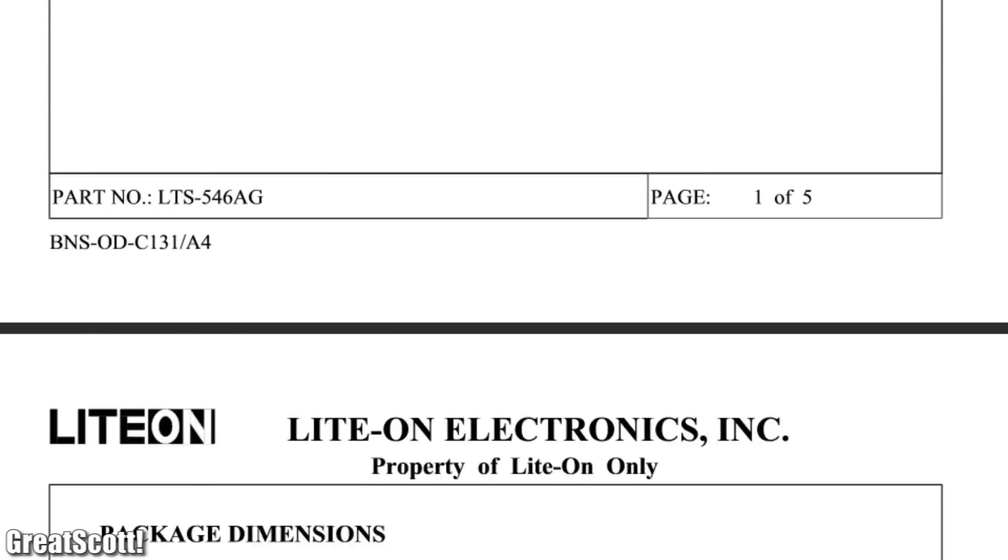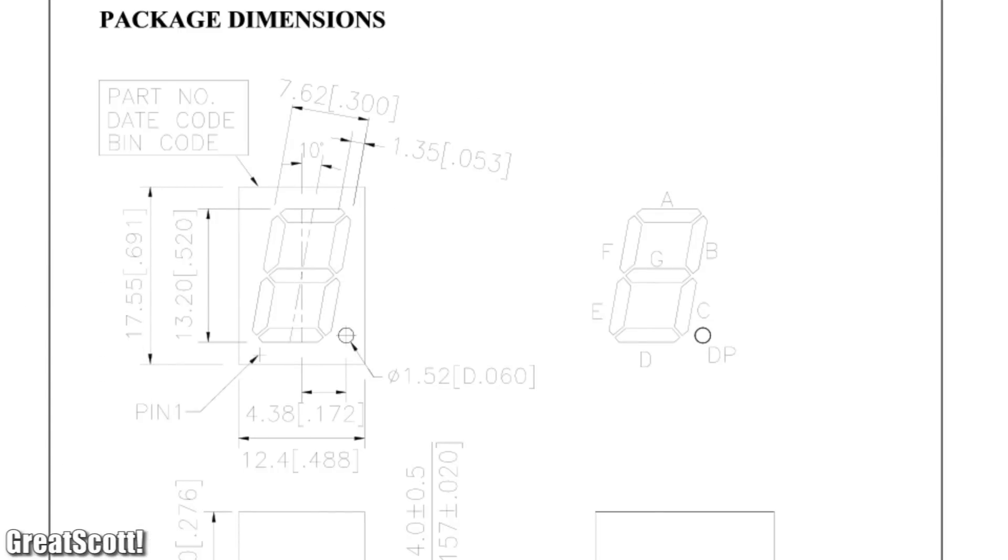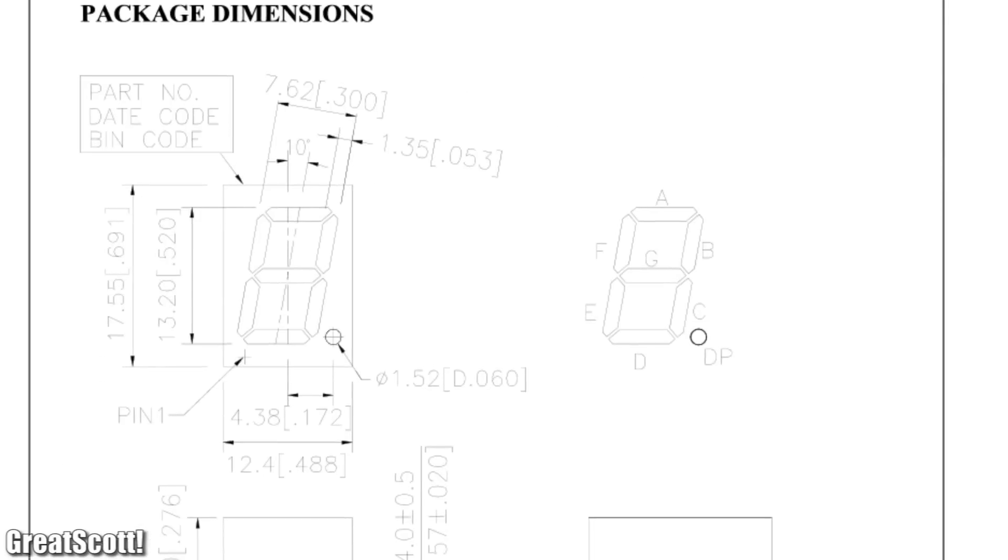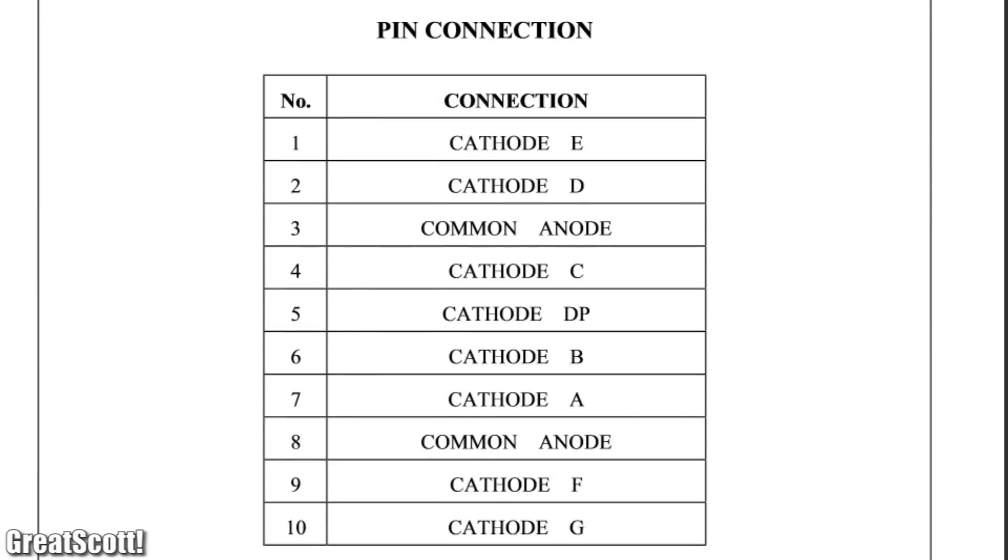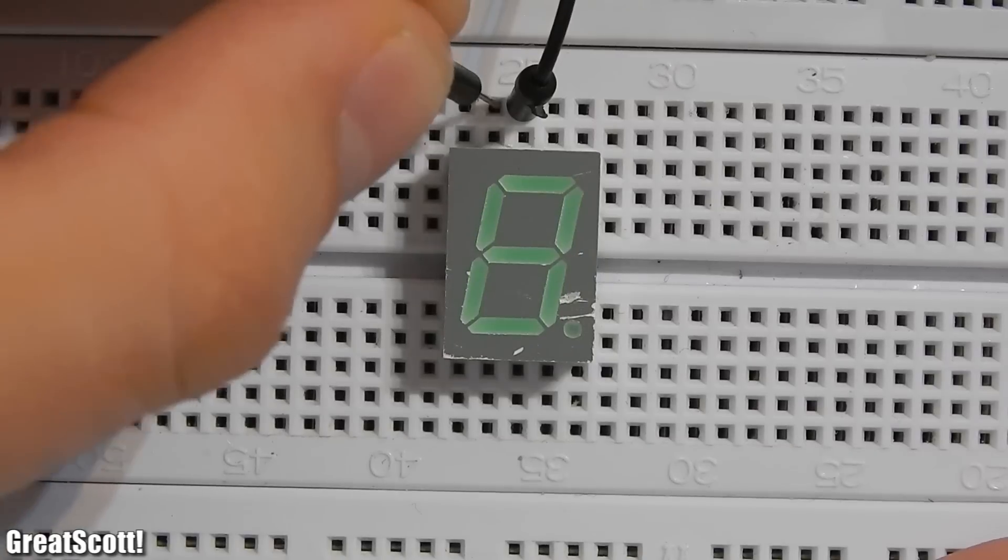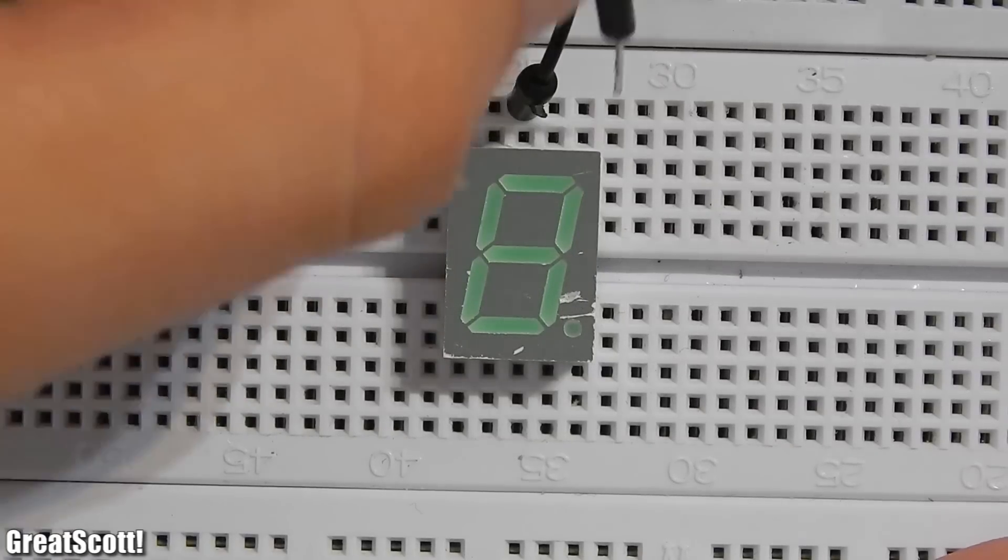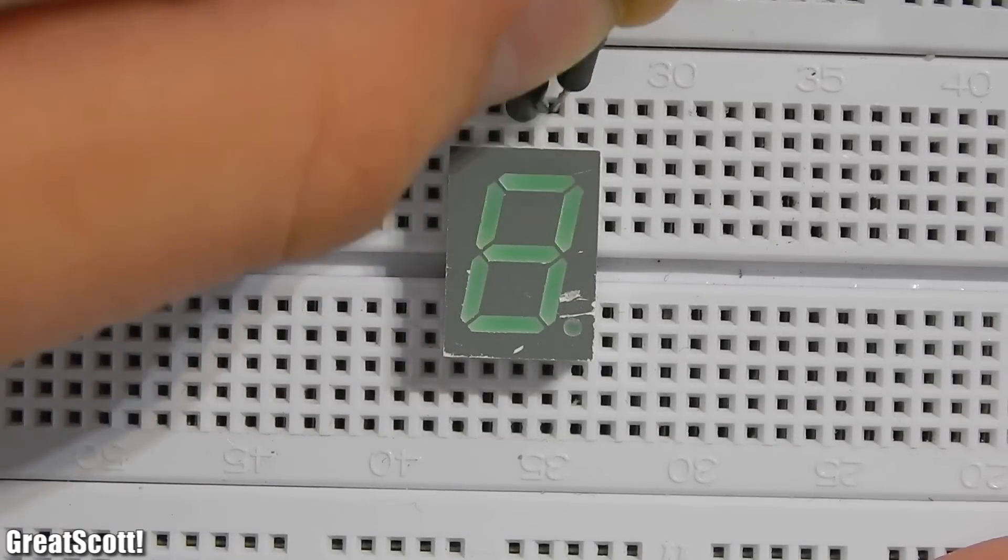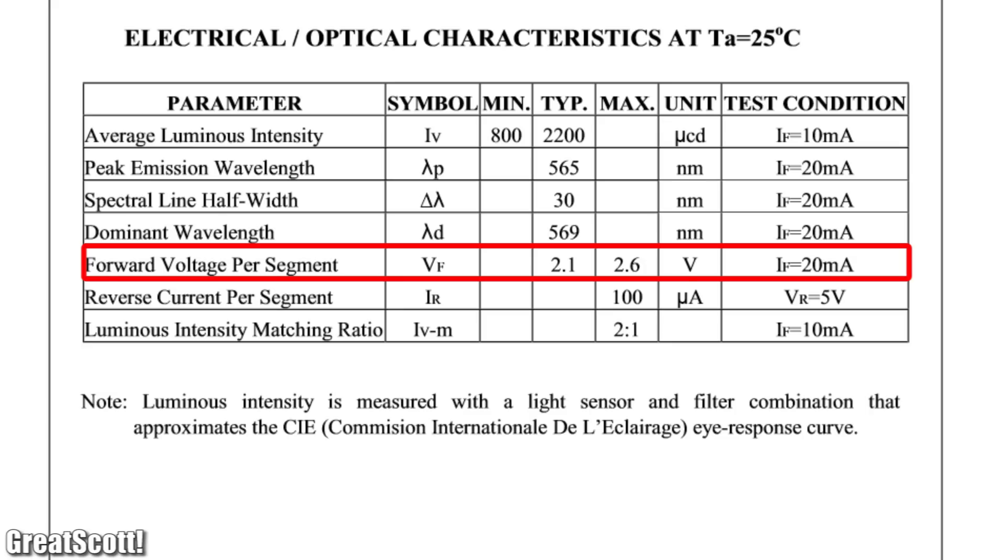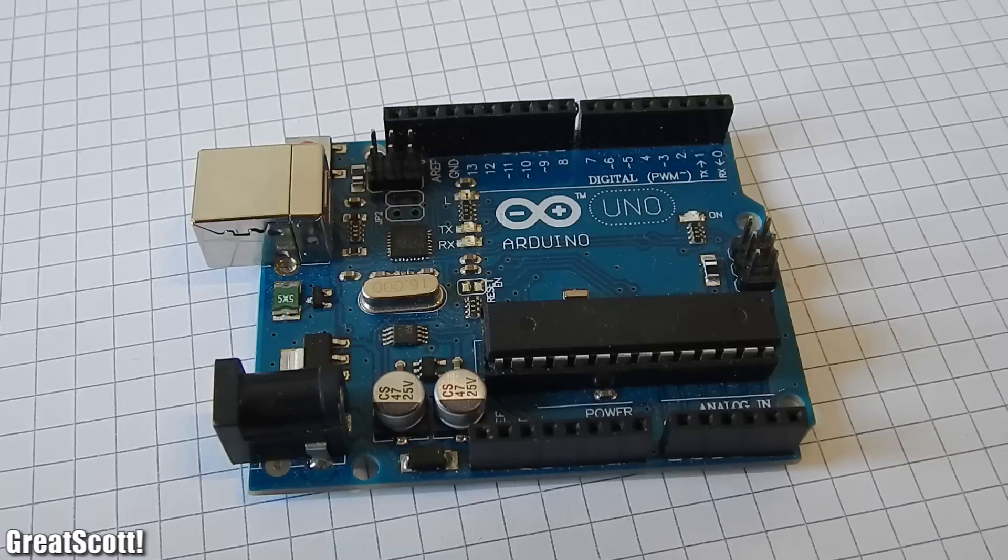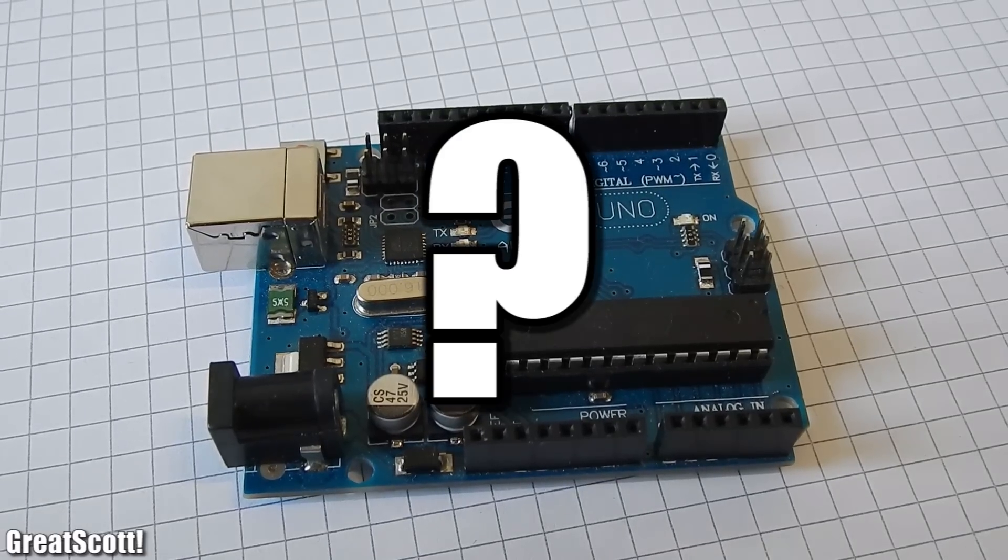Now we want to control the bars and the dots. We check the datasheet and see that the bars are labeled from A to G and the dot is DP. We scroll down a bit and there it is—now we know which pin is which bar and we can use this display to our heart's desire. Just be sure to use 2.1 volts and not 5 volts, but stay tuned for the destruction at the end of the video. But how can we display numbers without a microcontroller?